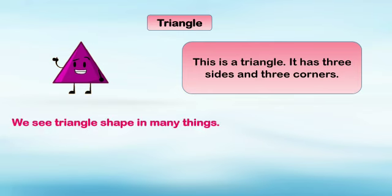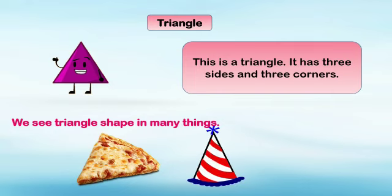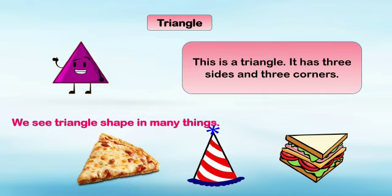We see triangle shape in many things. First, a slice of pizza — kids, can you see that a slice of pizza looks similar to triangle shape? Next, a clown cap also looks similar to a triangle. And a slice of sandwich also looks similar to a triangle. These all are examples of triangle.